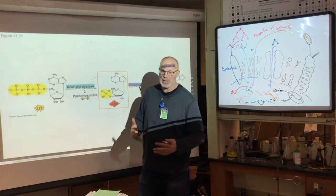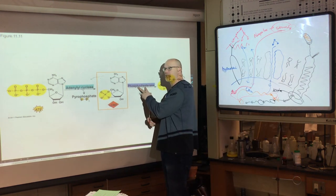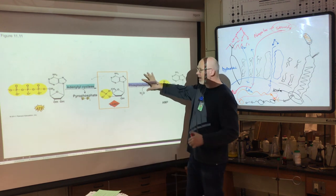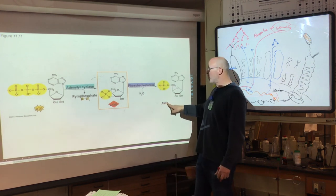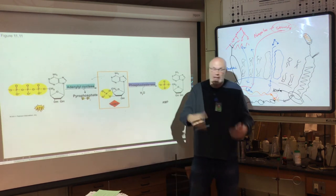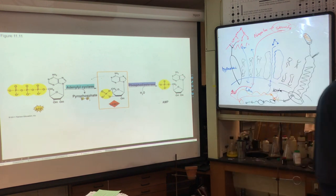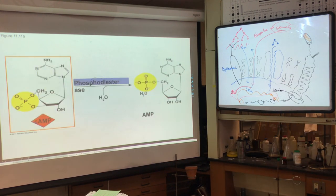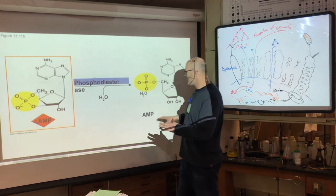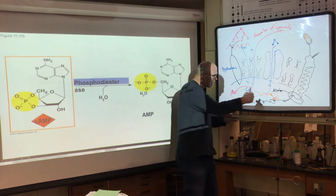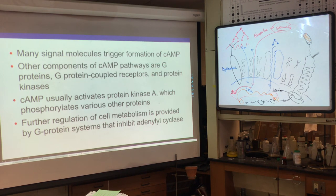Interestingly, caffeine blocks phosphodiesterase — so by blocking phosphodiesterase, cyclic AMP builds up with no way to turn off that heightened response. Being on too much caffeine is not good for your nervous system. Phosphodiesterase limits and reverts cyclic AMP back into AMP so you don't have that chemical messenger constantly driving the cascade of cell responses for epinephrine.